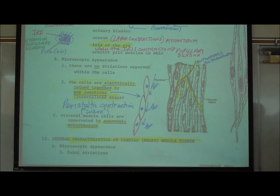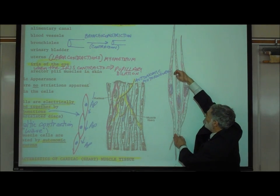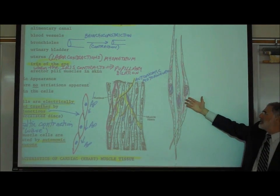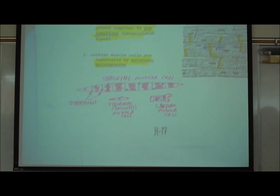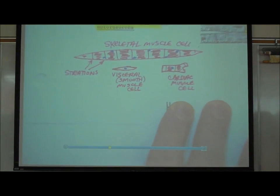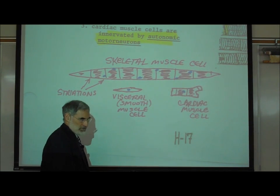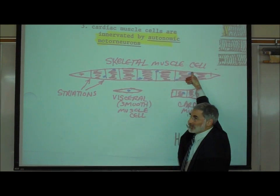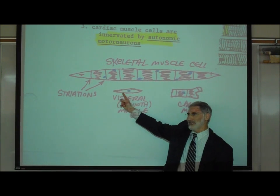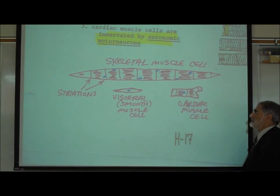Those are just some of the places visceral smooth muscle is found in the body. Now, what do visceral smooth muscle cells look like? They are just small, simple cells with one nucleus in each cell, and they do not exhibit prominent striations. This is in contrast to skeletal muscle. In the lab manual, I've tried to draw the relative difference in sizes between the three types of muscle cells. Skeletal muscle cells are really big, striated, and multinucleated. Visceral smooth muscle cells are smaller, with one nucleus like most normal cells, and no obvious striations — they are much smaller cells.